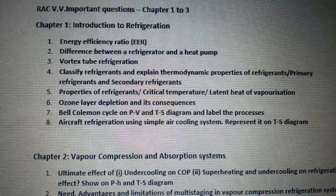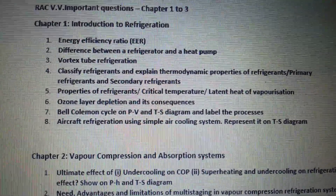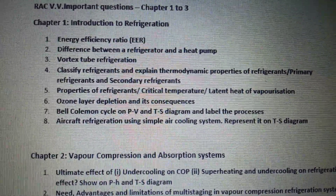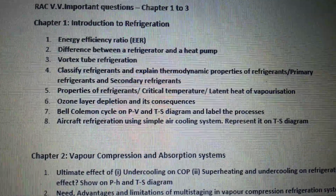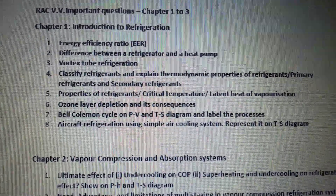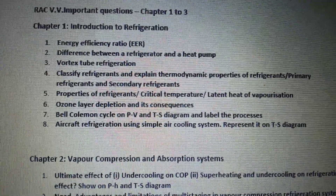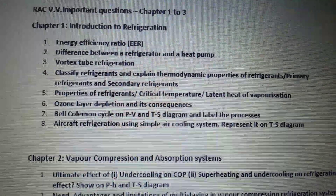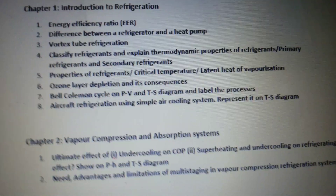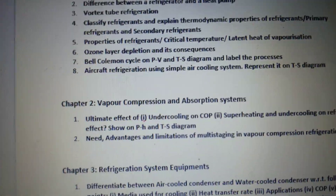Then ozone layer depletion and its consequences. Then Bell-Coleman cycle on PV and TS diagram and label the processes. Then aircraft refrigeration using simple air cooling system and represent it on a TS diagram. And then for chapter number 2, that is vapor compression and absorption system.